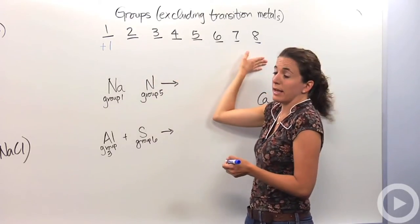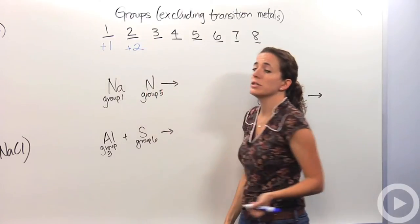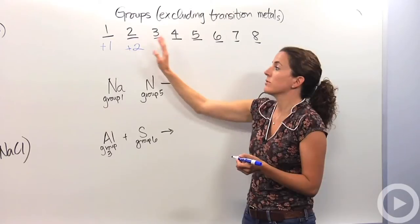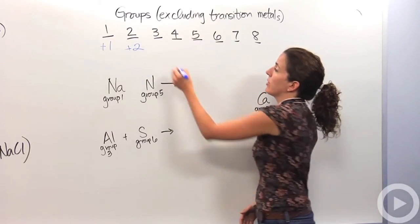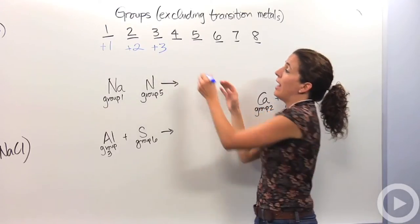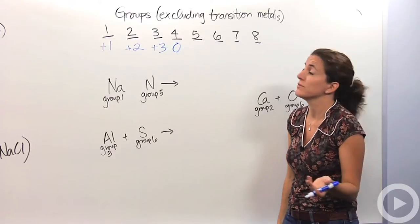Group two, they could either gain six or lose two. And as you guessed it, they're going to lose those two, making it a positive two charge. Group three, they could either lose three or gain five. They're going to lose three. Things in group four, the carbon group, typically don't make ions, so they're not going to gain or lose electrons normally, so we're going to predict them to have a charge of zero.